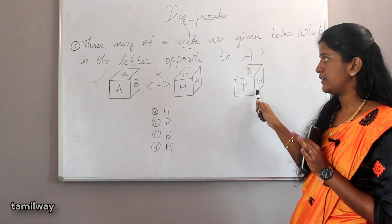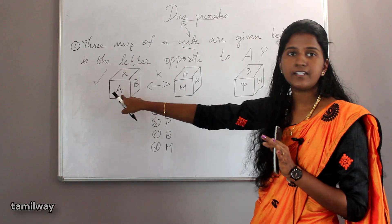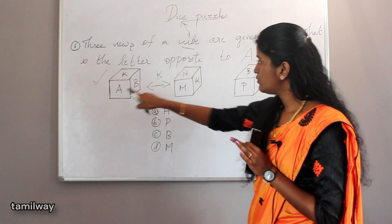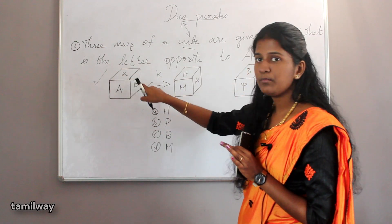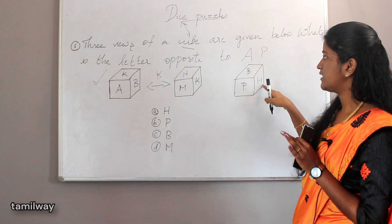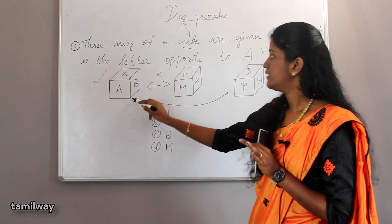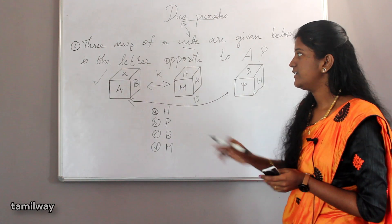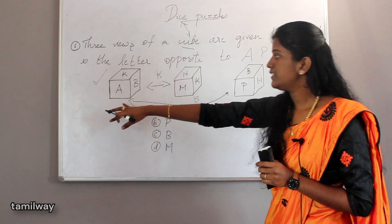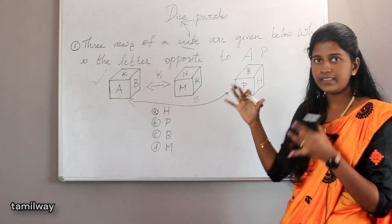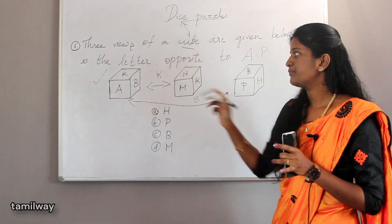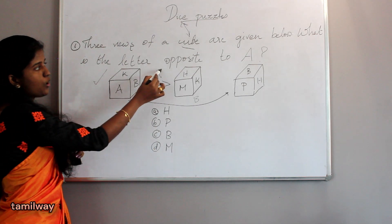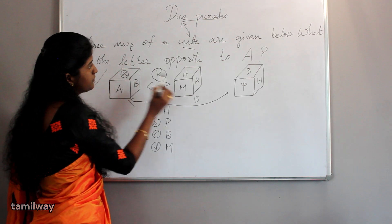First we choose one cube. Compare cube one to A and K. If A is here, we choose this cube. Now compare cube 2 with A, K and B — there is B and H. What is common? B is common. If you choose both, K is common; B is common. Use the one face common method.